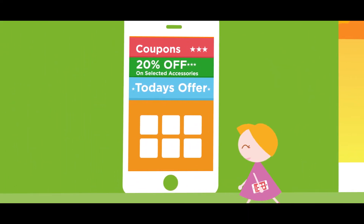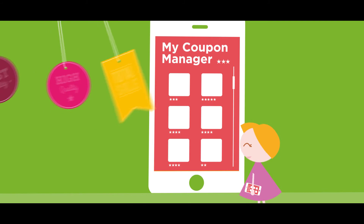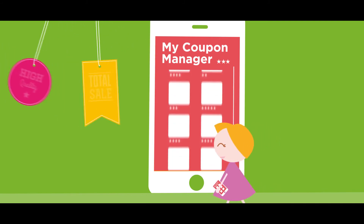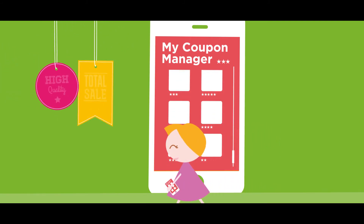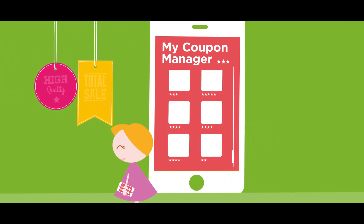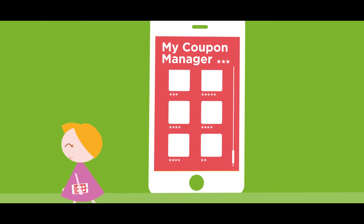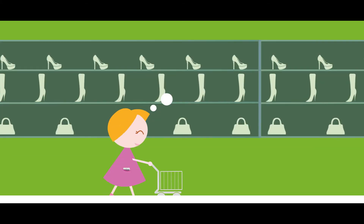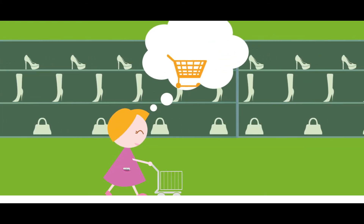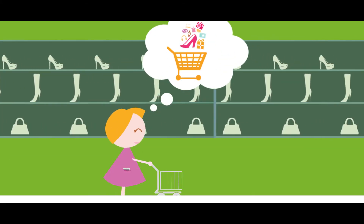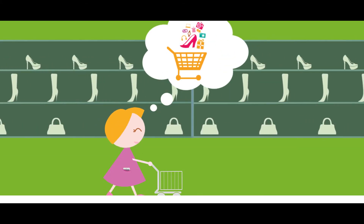Sally can carry all her coupons right with her on her phone because Smart BeaconStream acts as her personal coupon manager. She can also like and share Bob's awesome deals and coupons with her favorite friends. Sally just loves the related offers and in-store offers that she receives at Bob's store.